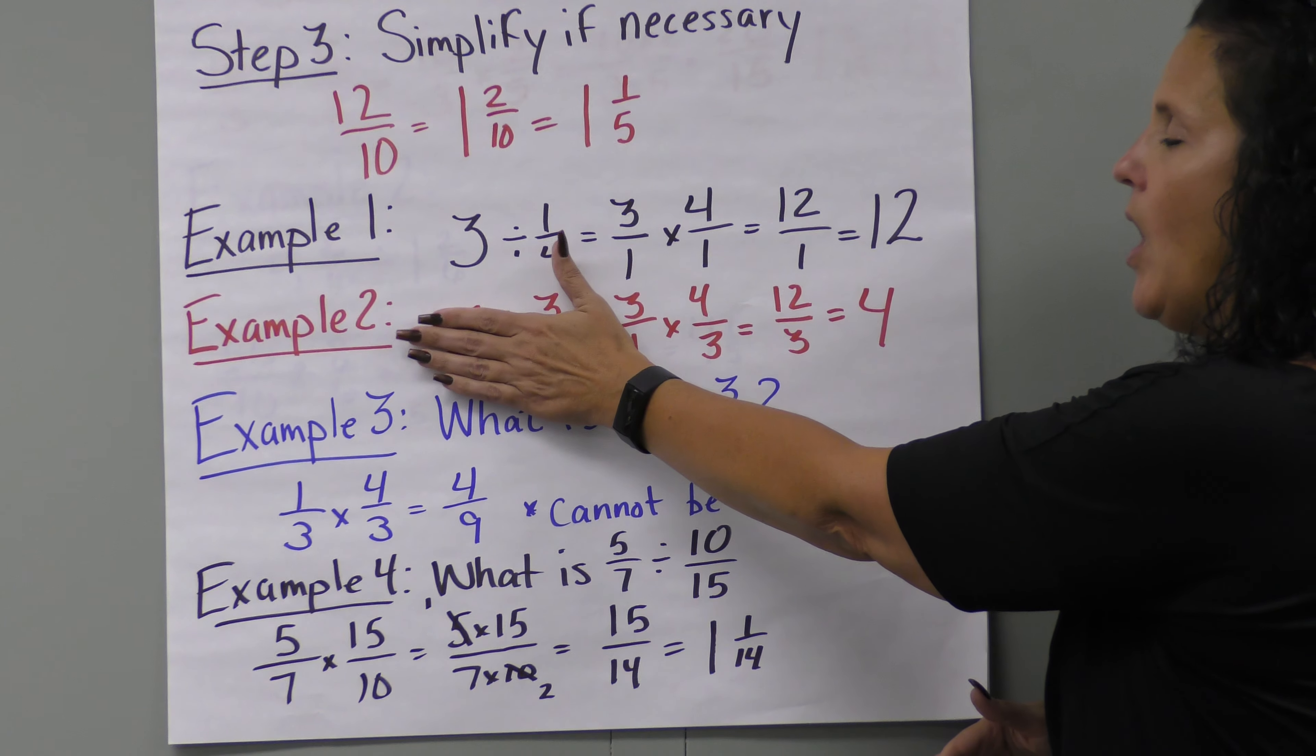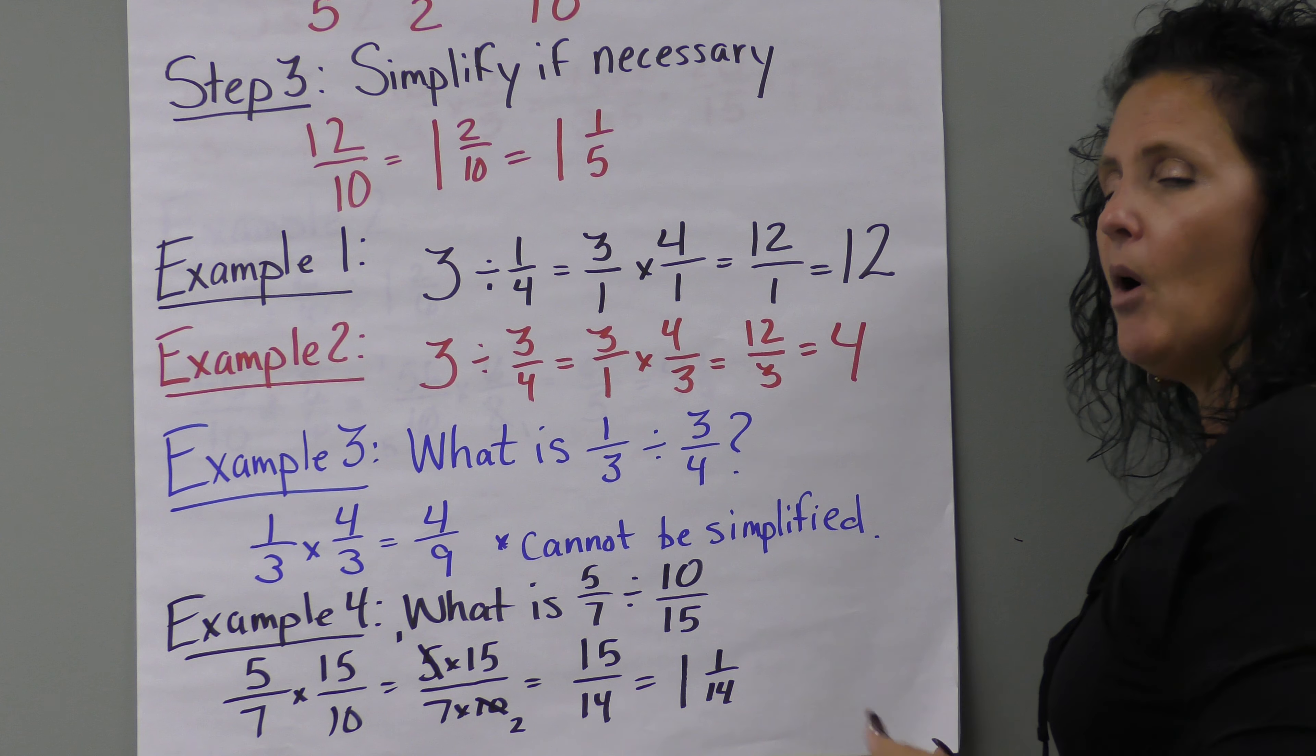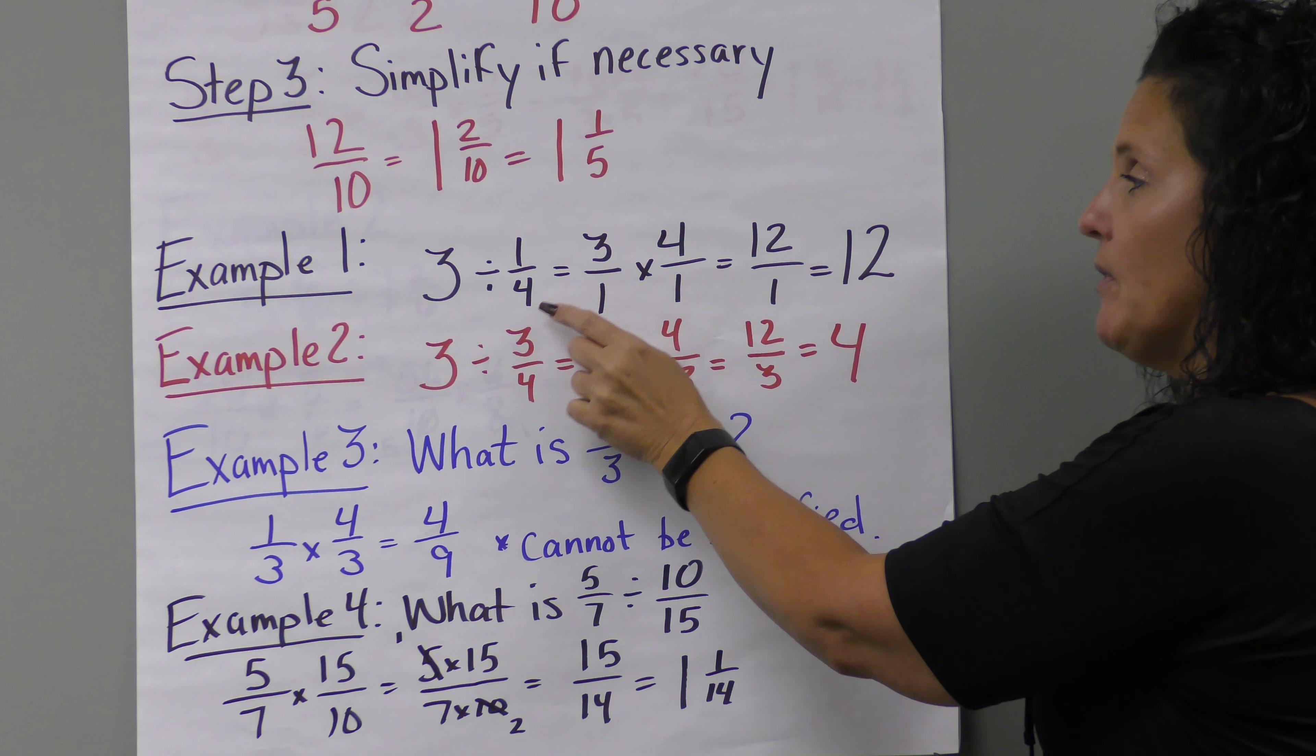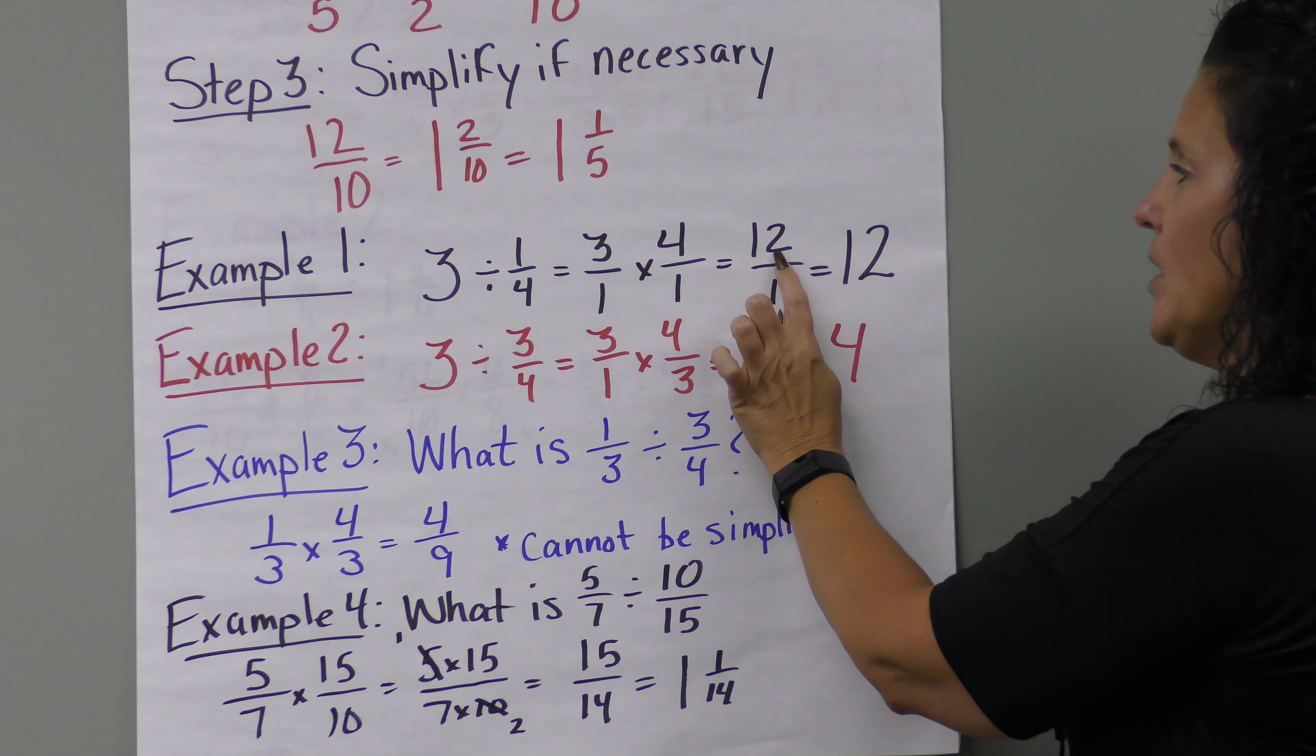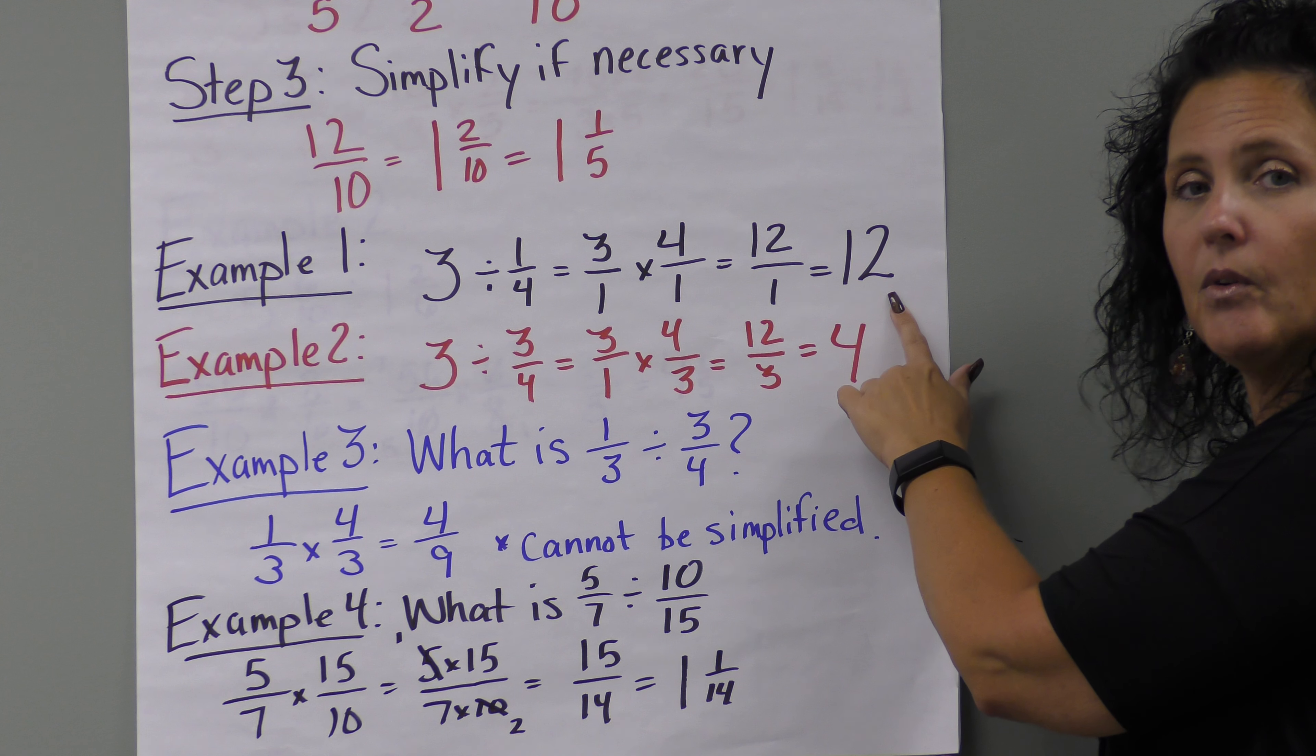In example one, we're using a whole number divided by a fraction. Remember when we did multiplication, we put our whole number over one. So we have three over one, and we multiply by the inverted form of one-fourth. We flip it to four over one, then multiply. Three times four equals twelve, one times one is one, so twelve over one equals twelve.